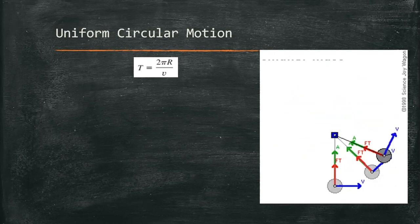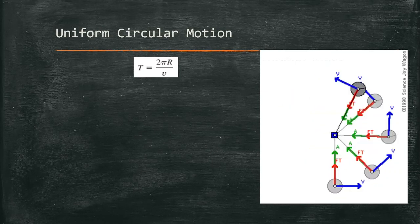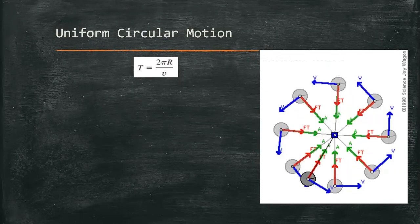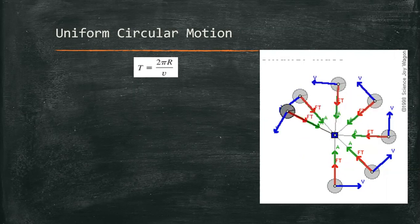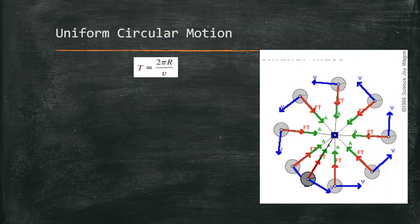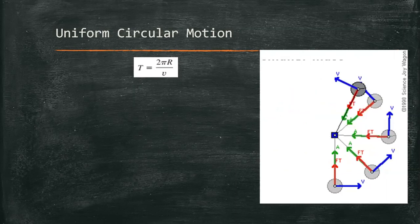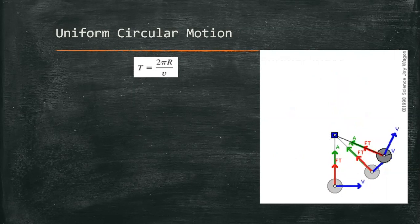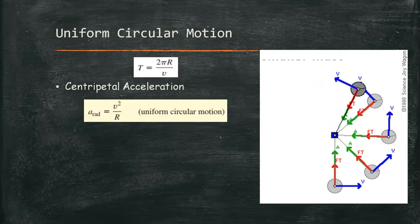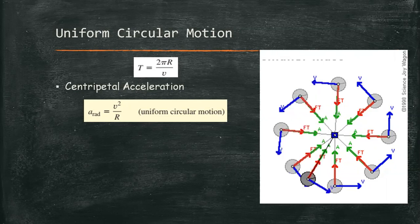So when a particle moves in a circular path with constant speed, the particle's acceleration is always directed toward the center of the circle. It is also perpendicular to the instantaneous velocity. The magnitude of the acceleration is constant and is given by v² over r. This acceleration is what we call centripetal acceleration.